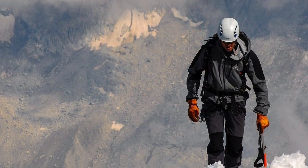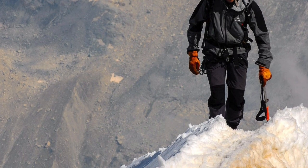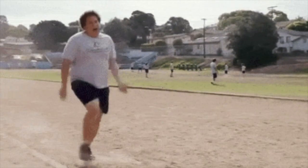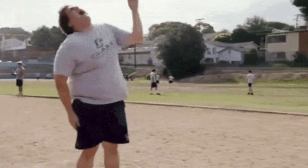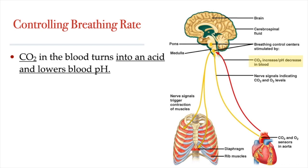Our breathing rate increases in response to lower atmospheric pressure at higher altitudes, but we don't have to ascend to a high altitude to experience this increase — all we have to do is some exercise. When you exercise, your body will naturally increase its ventilation rate in response to a higher oxygen need. But how does our body know to do that? Surprisingly, our breathing rate is not controlled by the amount of oxygen in our blood. Instead, it is controlled by our blood's pH, which changes depending on the amount of carbon dioxide gas dissolved in our blood.